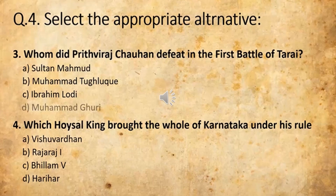Which Hoysala king brought the whole of Karnataka under his rule? The options are: Vishnuvardhana, Raja Rajpur, Trilokamalla, and Hariar. The answer — because we have already done this and already marked it — is Vishnuvardhana.